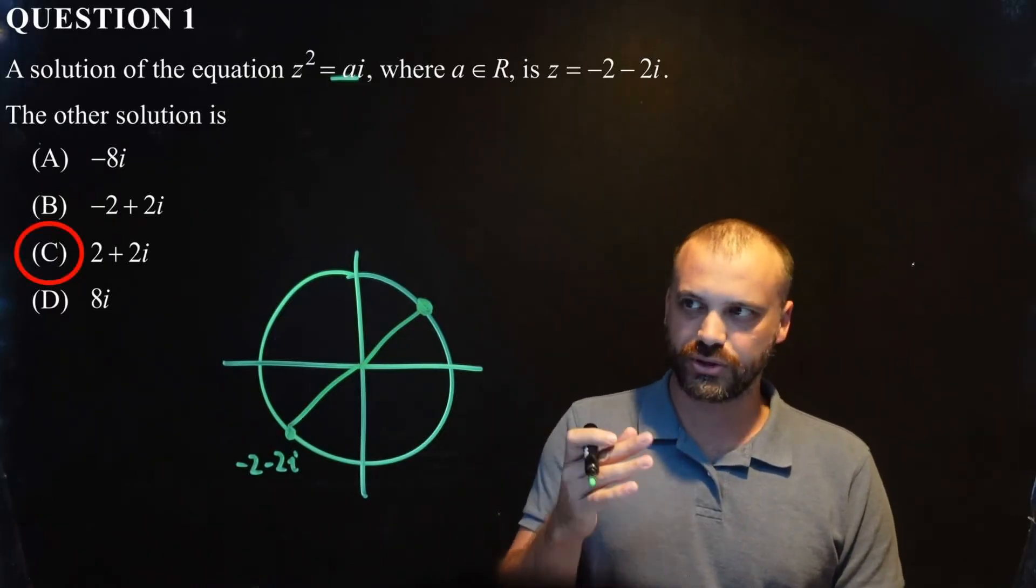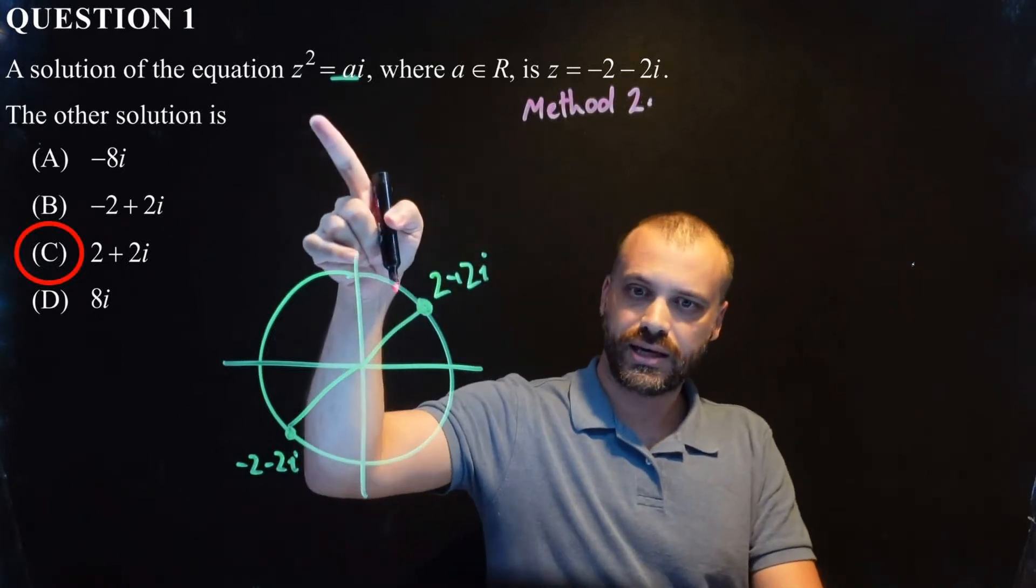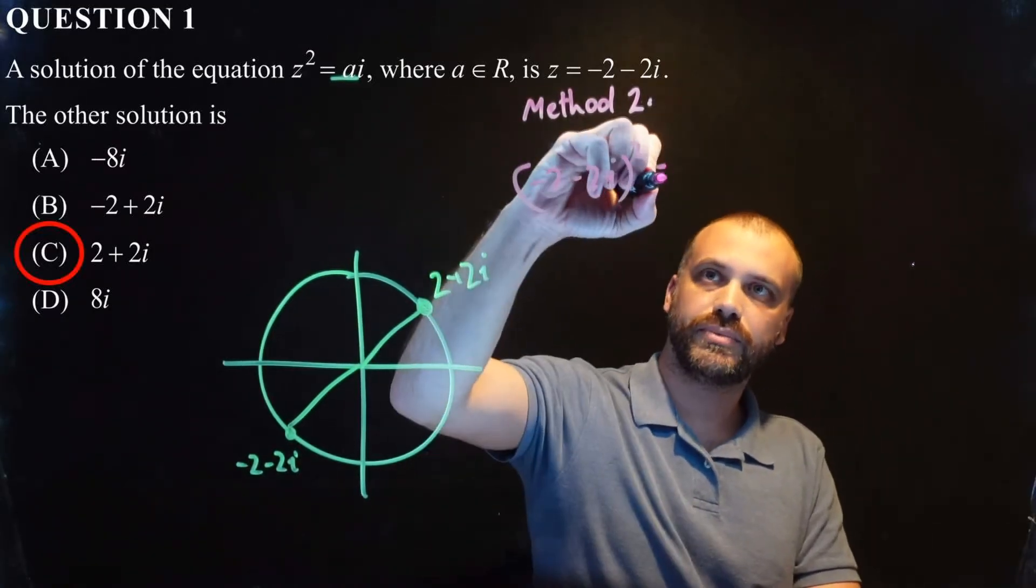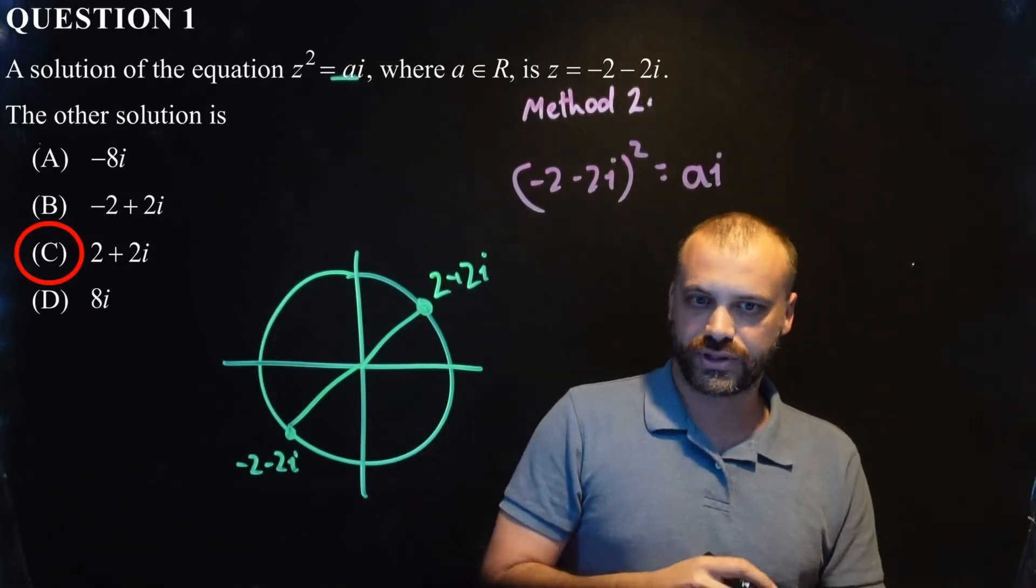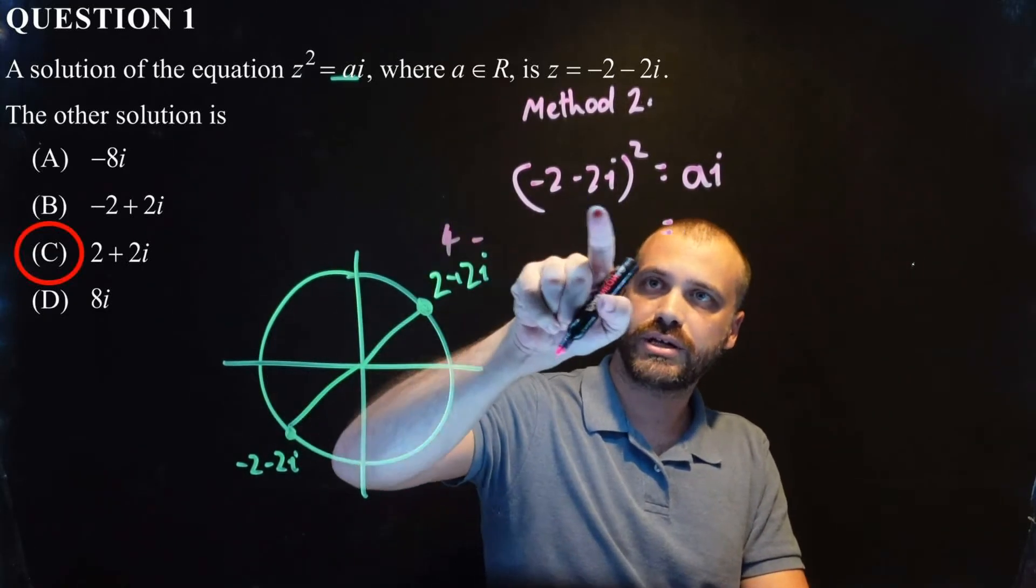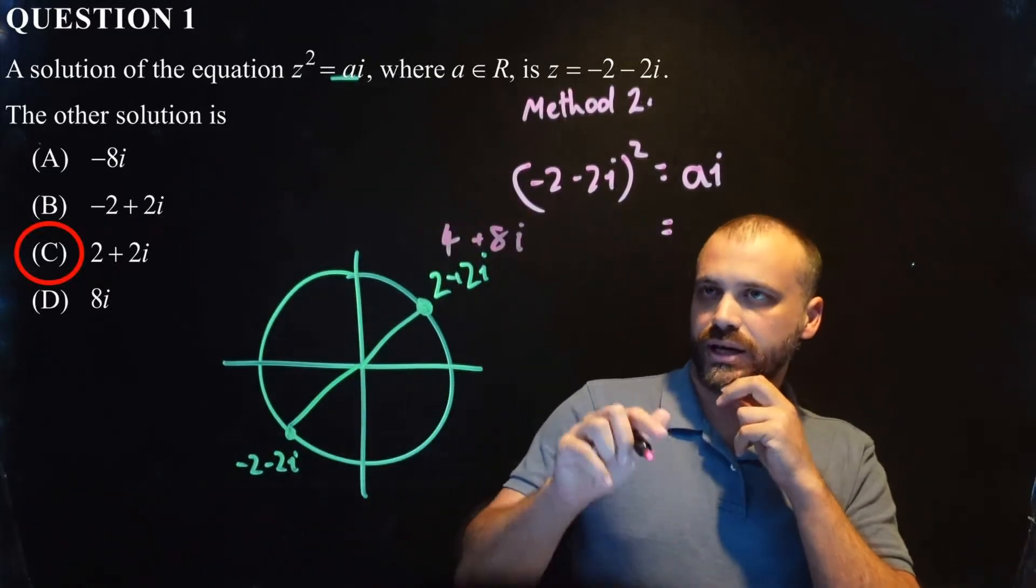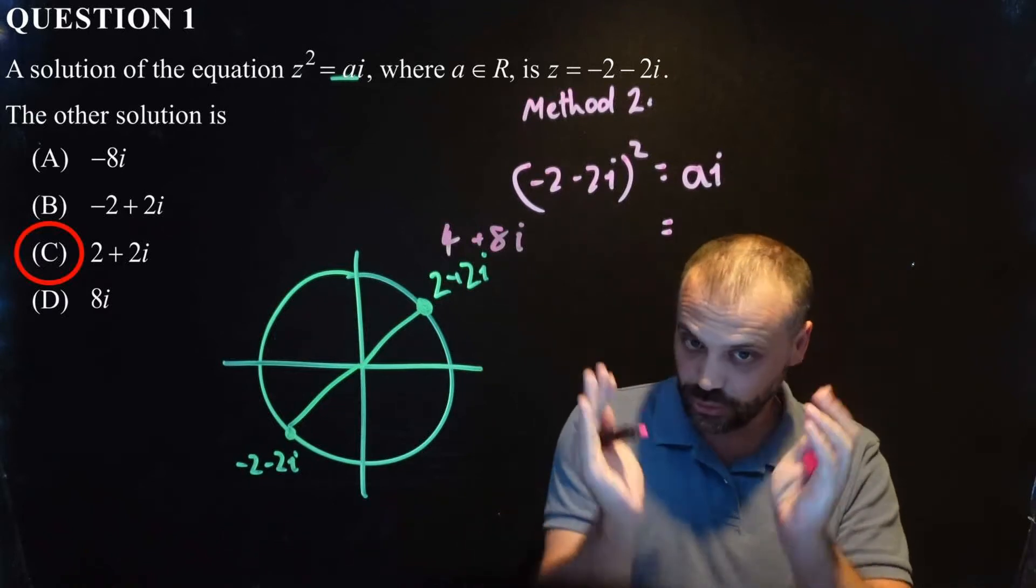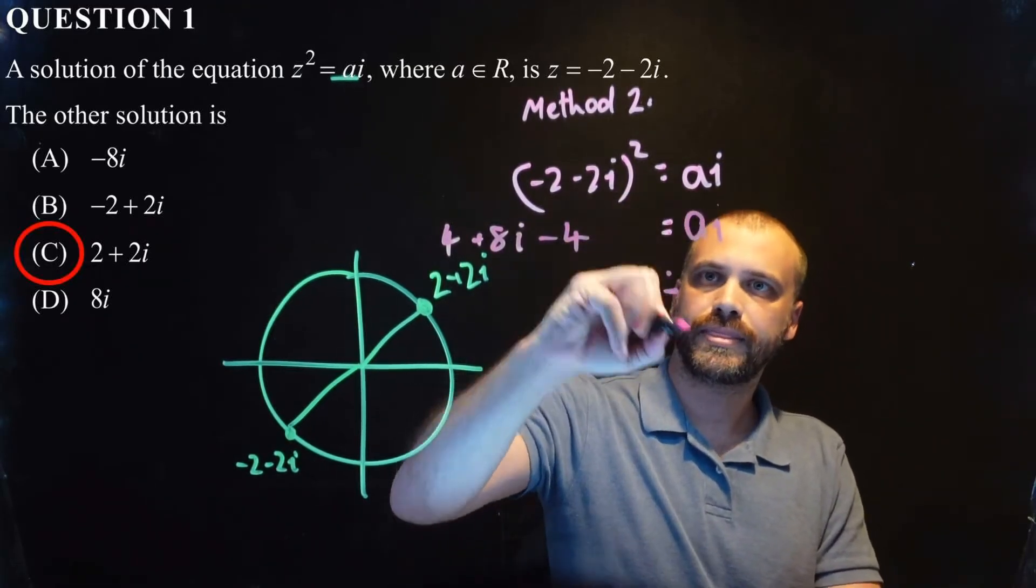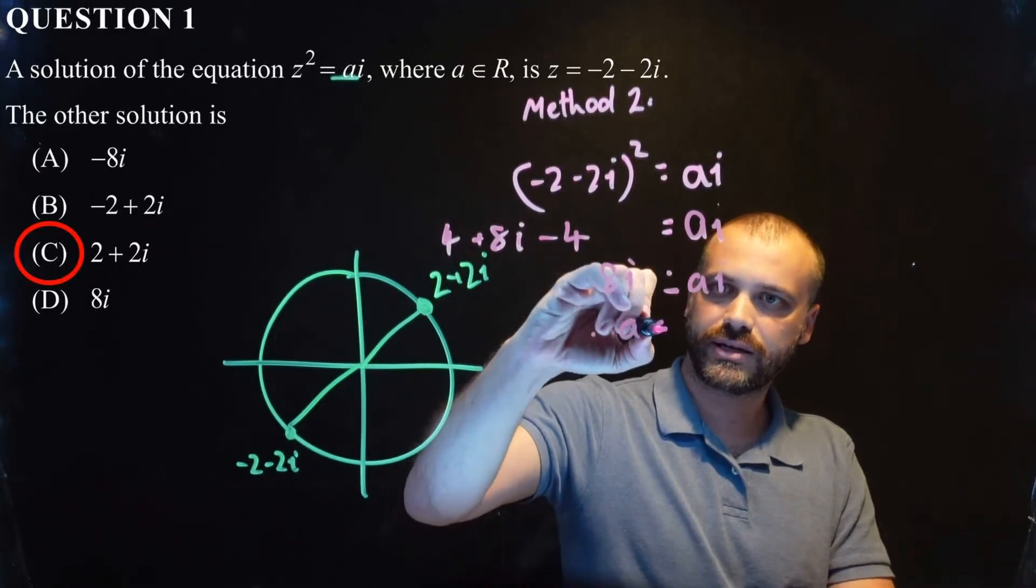Alright, now, that is a little bit too much for people, so how else could we do it? So, another method would be, well, we know one of the solutions is negative 2, negative 2i. So, that means that in this equation, z can be equal to negative 2, negative 2i. So, negative 2, negative 2i squared equals ai, and then we can solve this for a. So, looking at our left-hand side, we have negative 2 times negative 2 is 4. We have negative 2i times negative 2 twice, so that's going to be positive 8i, and then we have negative 2i all squared. So, that's going to be positive 4i squared, which is negative 4.